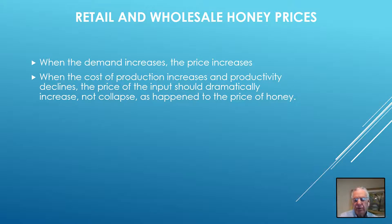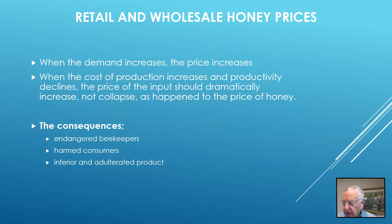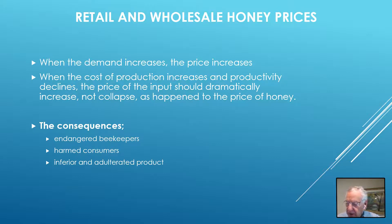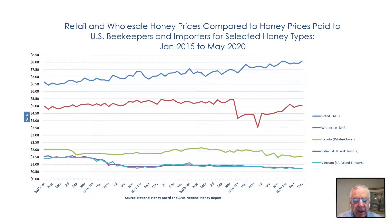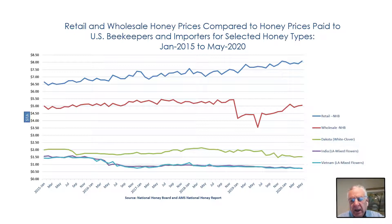The prices of inputs should dramatically increase, not collapse. The problem of food fraud has created an existential economic catastrophe for beekeepers producing authentic honey, who are in price competition with sellers of low-priced fraudulent products. Dr. Stan Dabakow, Emeritus Economist from the U.S. Department of Agriculture, has illustrated this contradiction where retail honey prices have increased while prices for beekeepers have collapsed.